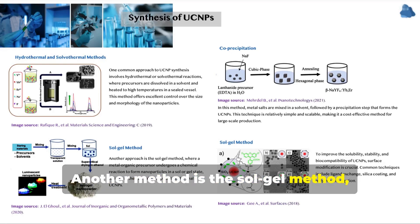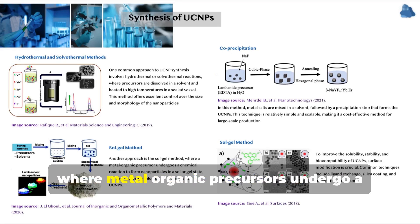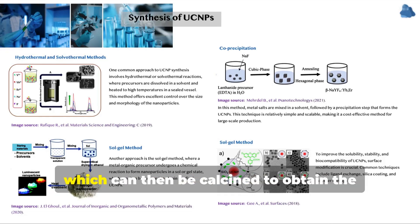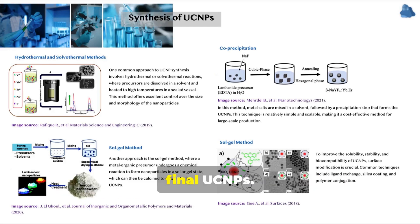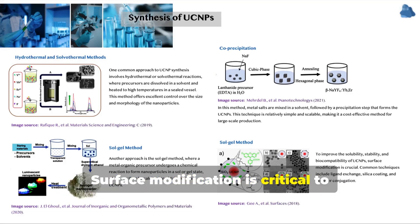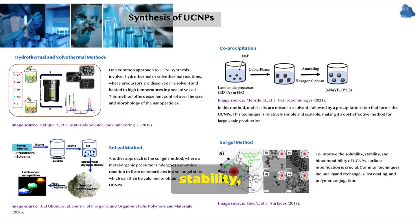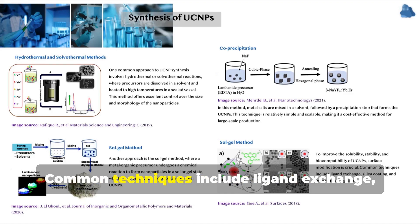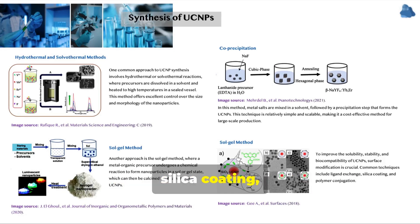Another method is the sol-gel method, where metal organic precursors undergo a chemical reaction to form nanoparticles in a sol or gel state, which can then be calcined to obtain the final UCNPs. Surface modification is critical to improve the solubility, stability, and biocompatibility of UCNPs. Common techniques include ligand exchange, silica coating, and polymer conjugation.